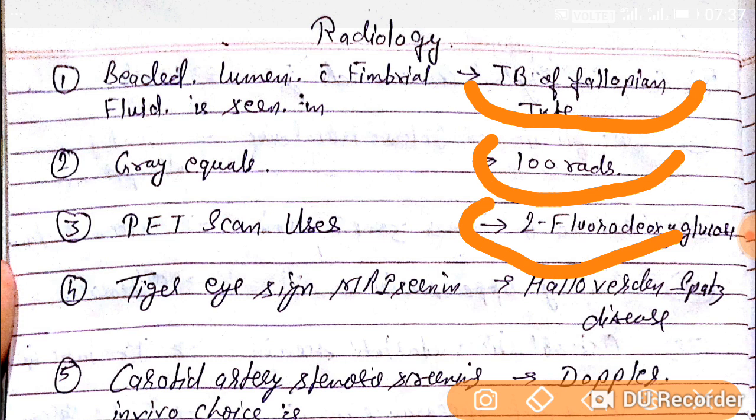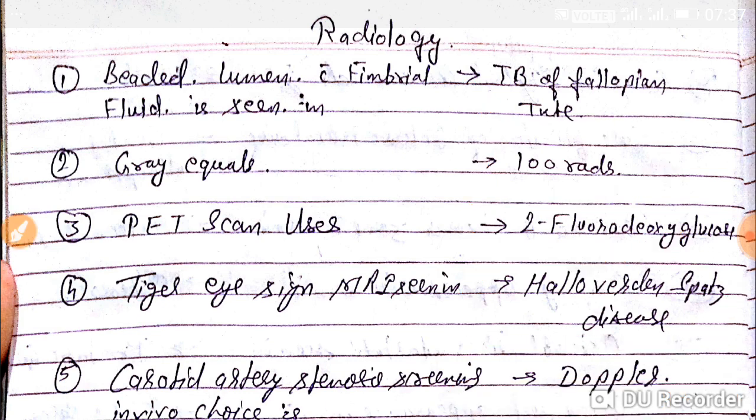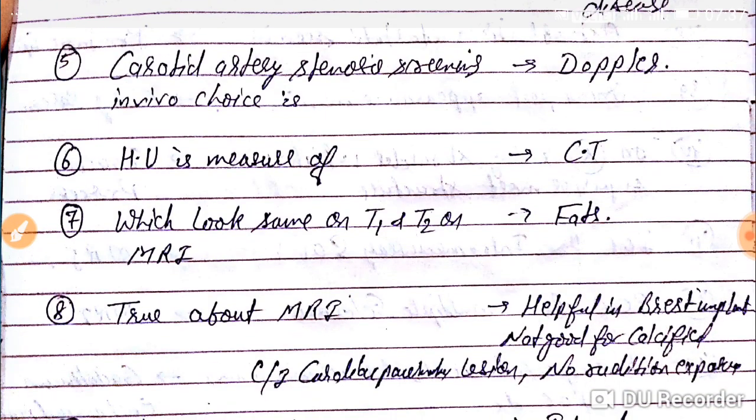Question number fourth. Tiger eye sign on MRI is seen in Hallervorden-Spatz disease. This sign is seen in Hallervorden-Spatz disease.